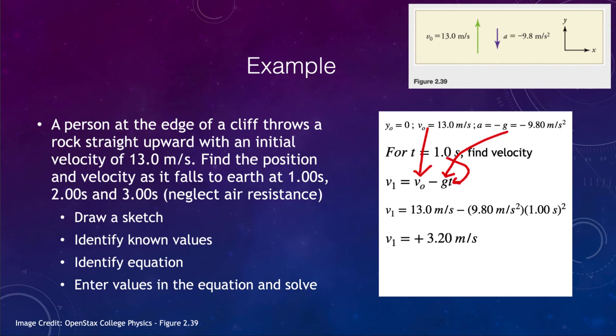So we will calculate and find out that the velocity is going to be 3.20 meters per second. And what does that mean? Again, it's a positive sign, which means that it is moving upward at this time. So after this first second, the velocity is still positive, meaning it's still moving upward after one second. And we know the position at which it's moved.